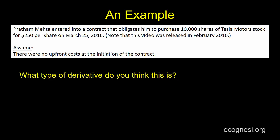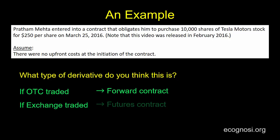In the previous video, we said that forwards and futures are contracts for delivery of an asset in the future, and over here we have one such contract. The asset to be delivered is Tesla stock, a financial asset. In the previous video, we referred to a delivery of gold, a physical asset. So this could either be a forward or a futures contract. If it is traded over the counter as a private contract between two parties, then it'd be a forward. If it is traded on an exchange, it'd be a futures.